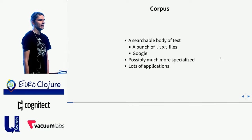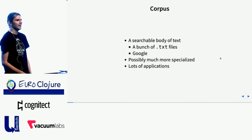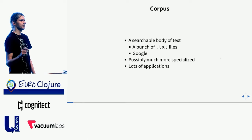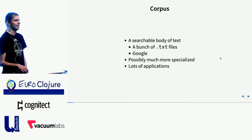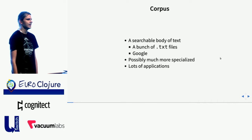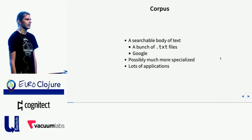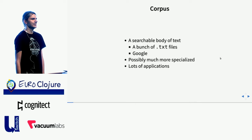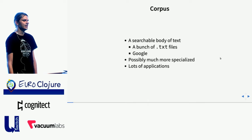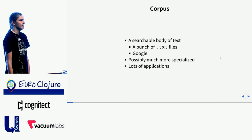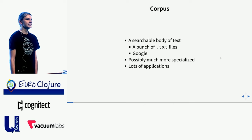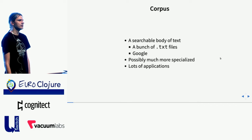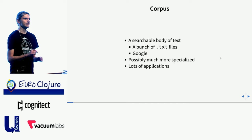So let's start with answering the question: what is a corpus? In the broadest sense, a corpus is just a searchable body of text. This can be as simple as just a bunch of text files in plain text format that you can grep through, or at the other end of the spectrum, the World Wide Web itself can be thought of as a corpus that you can search using search engines such as Google or DuckDuckGo. Depending on what you want to do with the corpus, these two approaches can actually get you pretty far, but they do have limitations.